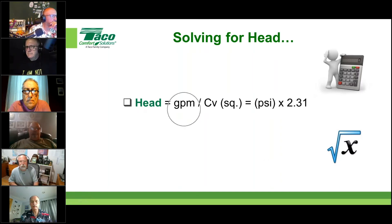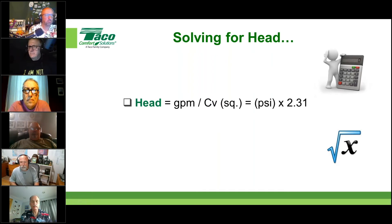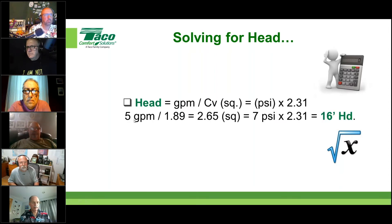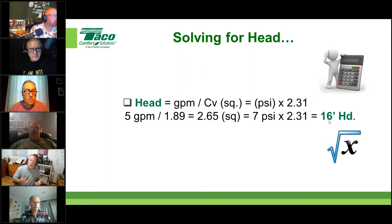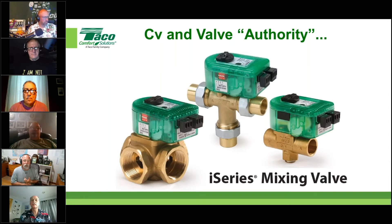Here's the calculation simplified. To solve for head, take GPM divided by the Cv of the valve, square that result to get PSI, then multiply by 2.31 to convert PSI to feet of head. For example: five GPM through a valve with a Cv of 1.89 gives 2.65; squared is seven PSI; times 2.31 equals 16 feet of head. That's how we use Cv to estimate pressure drop.